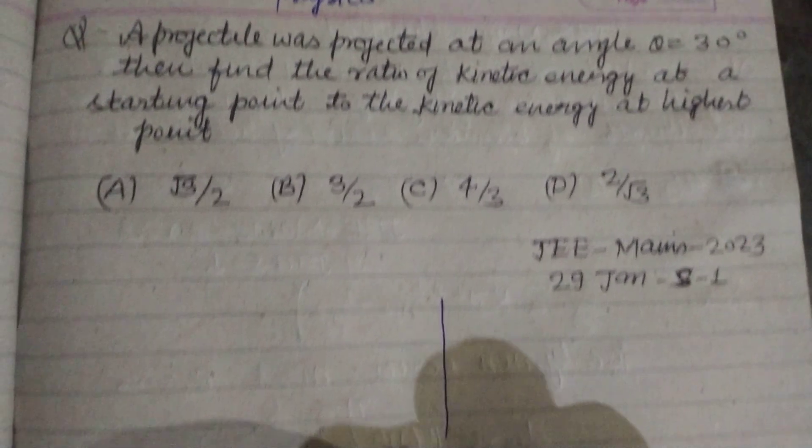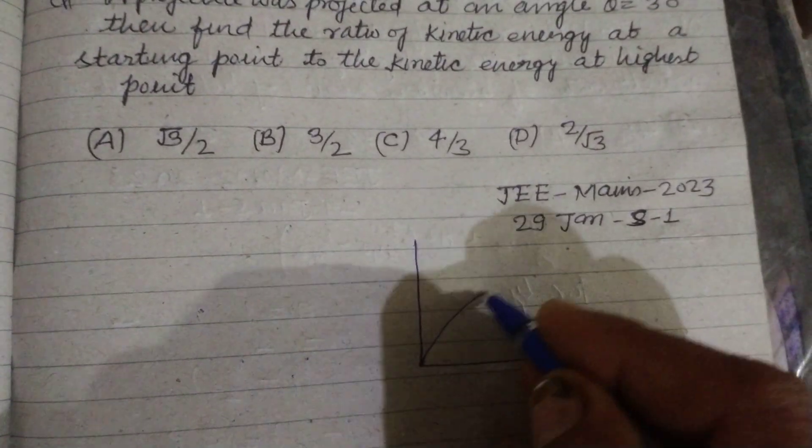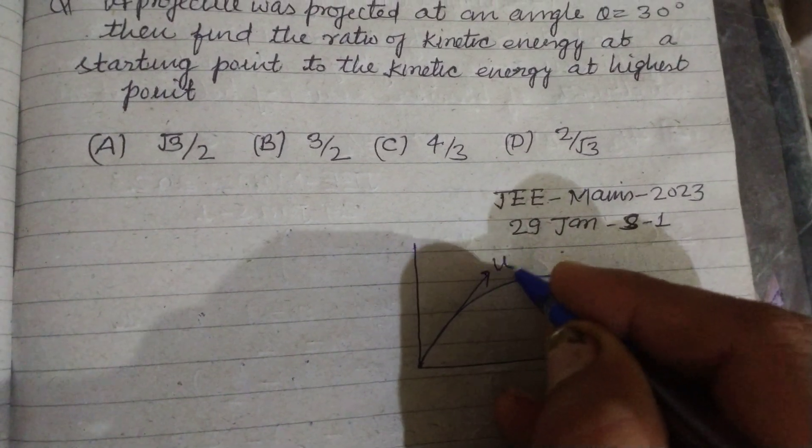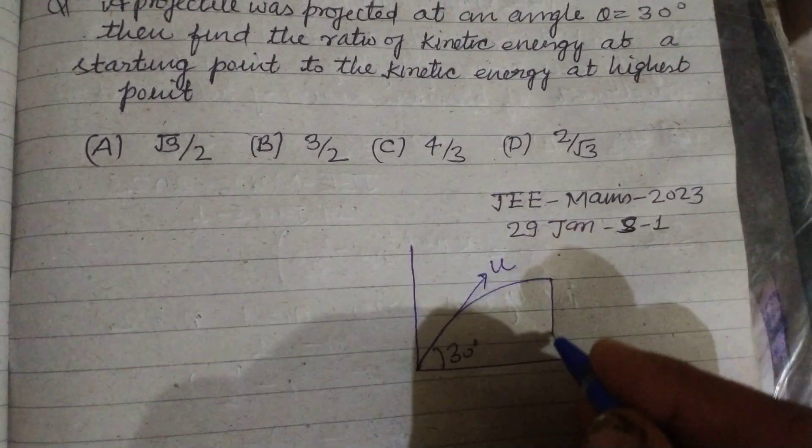So students, here is a projectile projected at angle of 30 degrees with initial velocity U. This is angle 30 at highest point.